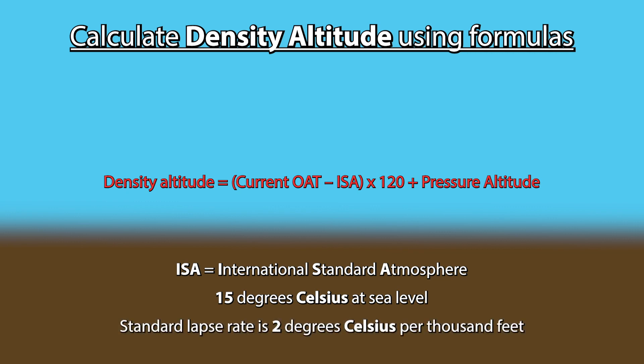So, if your field elevation is 1000 feet, the International Standard Atmosphere temperature would be 13 degrees Celsius. Multiply that difference by 120 and add the pressure altitude. That gives you your current density altitude.